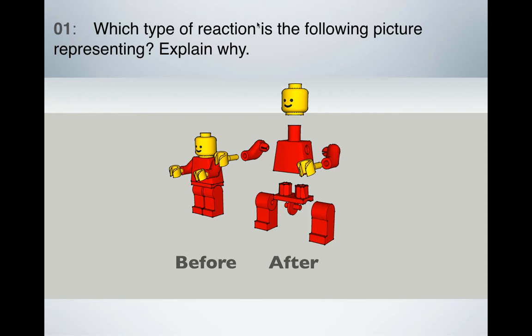So if you watched the last video, that video is about exactly what the five different types of reactions are. In your notes, I want you to look at these pictures and see if you can explain what type of reaction each one is and why. For example, right here I have my nice little Lego man — this is my before picture, and this is my Lego man after. Which type of chemical reaction do you think best describes this picture, and tell me why?